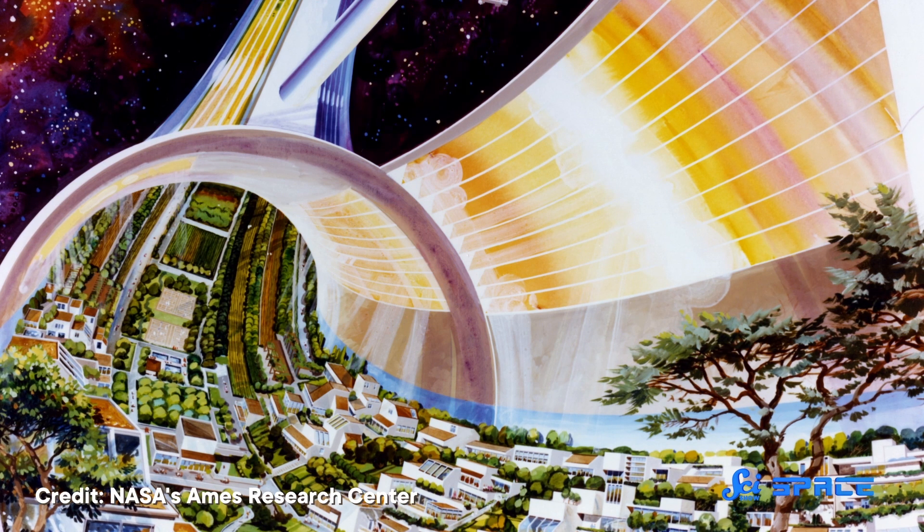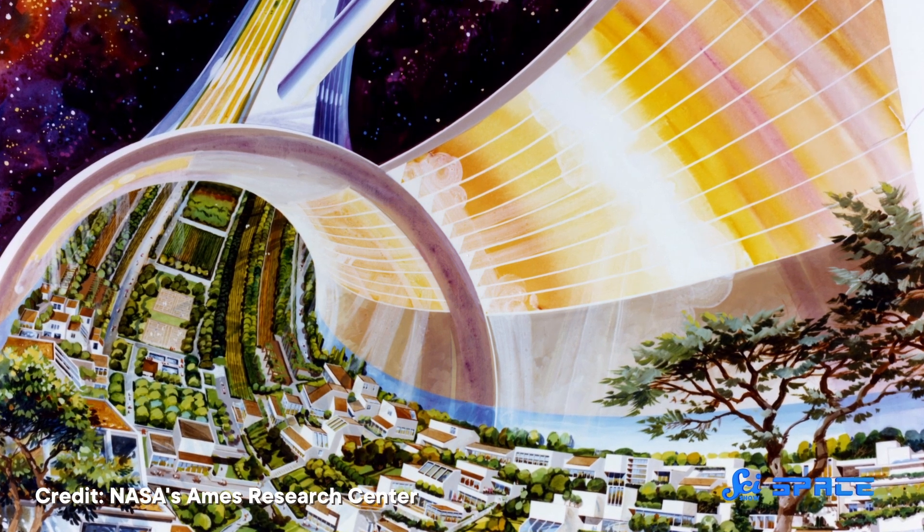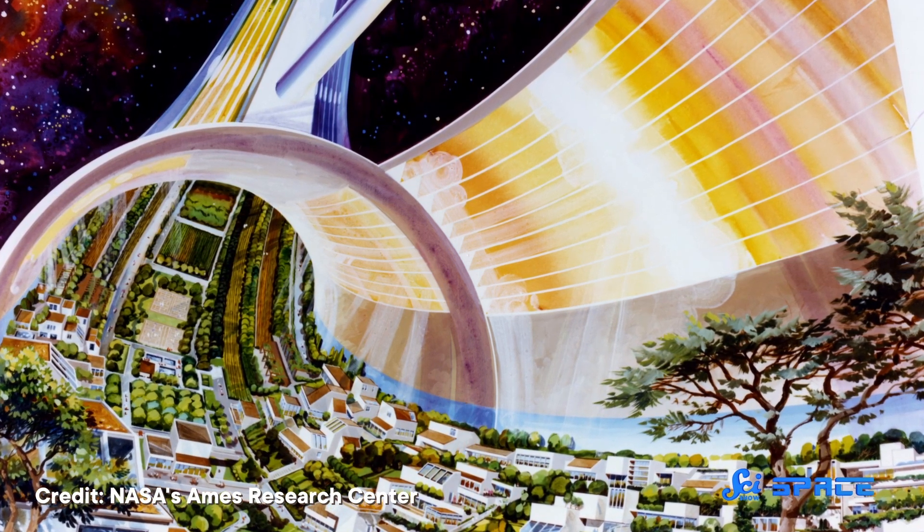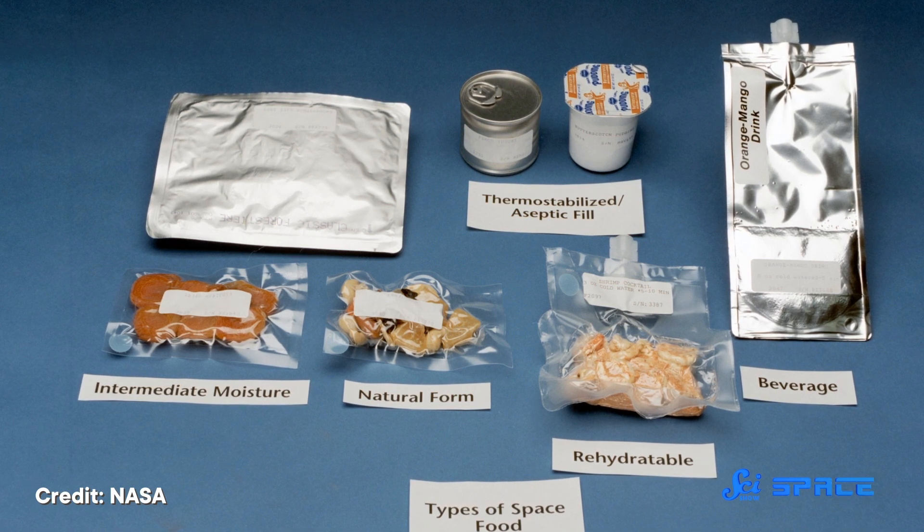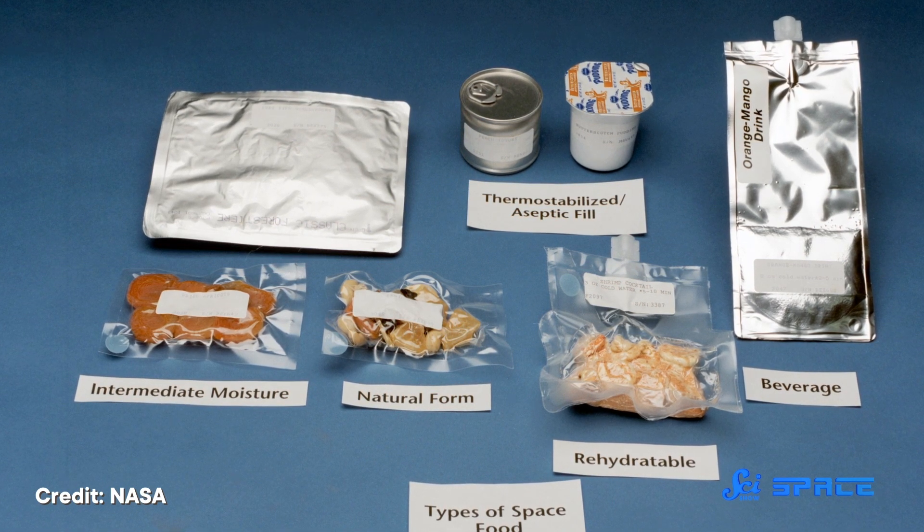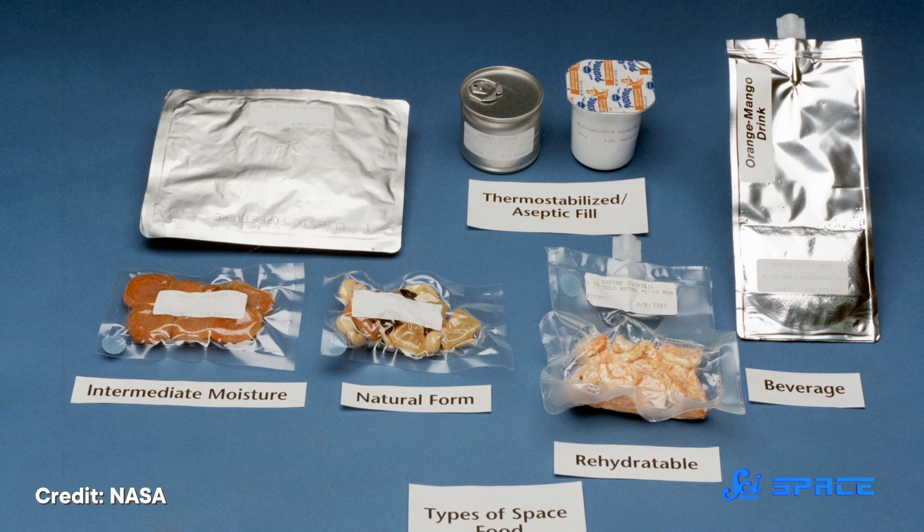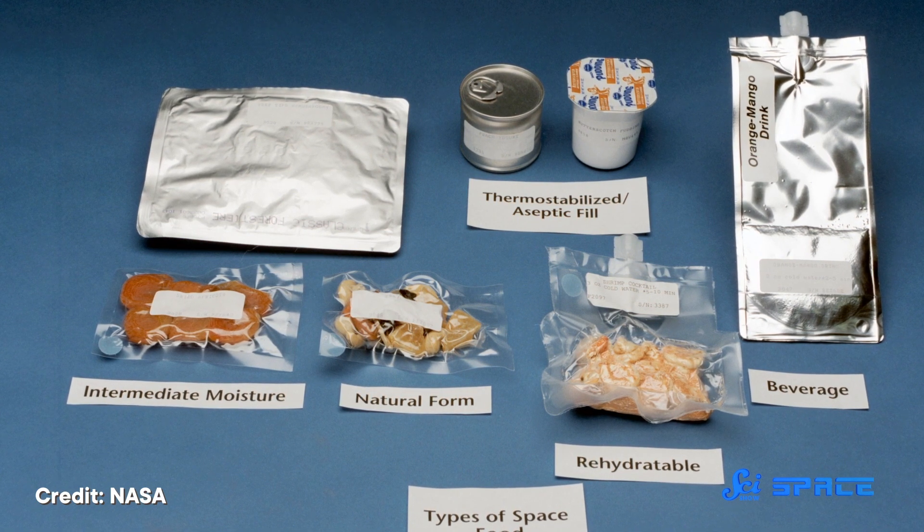If we ever want to get to the point where we're living it up in space colonies, we've got a few big hurdles to overcome. One of the big ones is figuring out what we're gonna eat. After all, we can't live off pre-packaged, freeze-dried food forever. And calling in a several thousand-kilogram takeout order to Mars isn't exactly cheap, either.